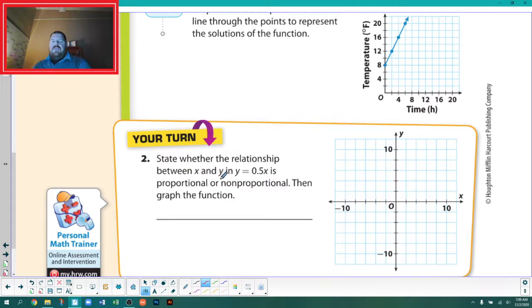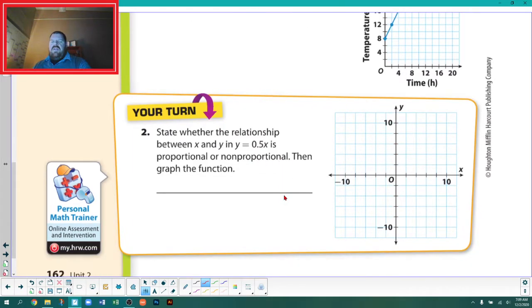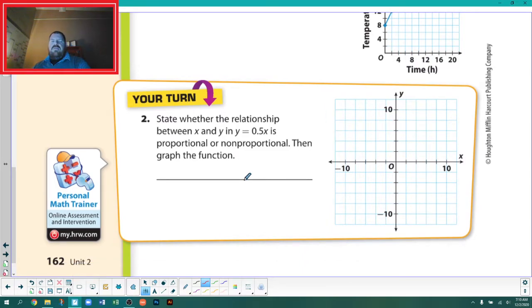State whether the relationship between x and y in y equals 0.5x is proportional or non-proportional. You can tell without graphing it. Since it's y equals 0.5x and that's all, technically there's a plus 0 there, that tells me the y-intercept is 0. So this is linear and proportional.